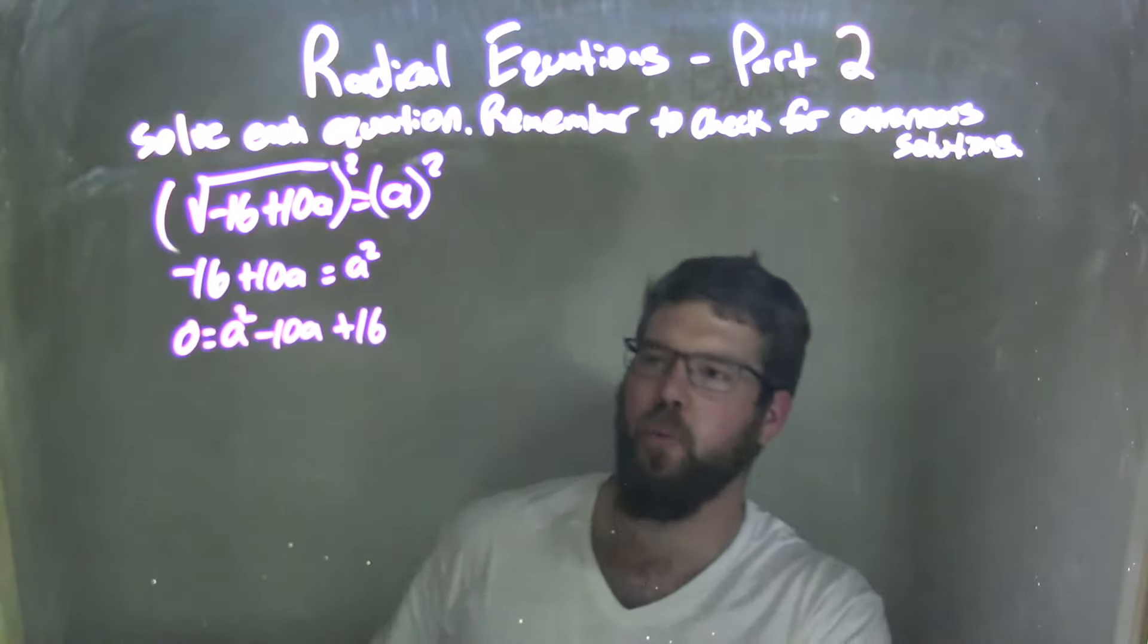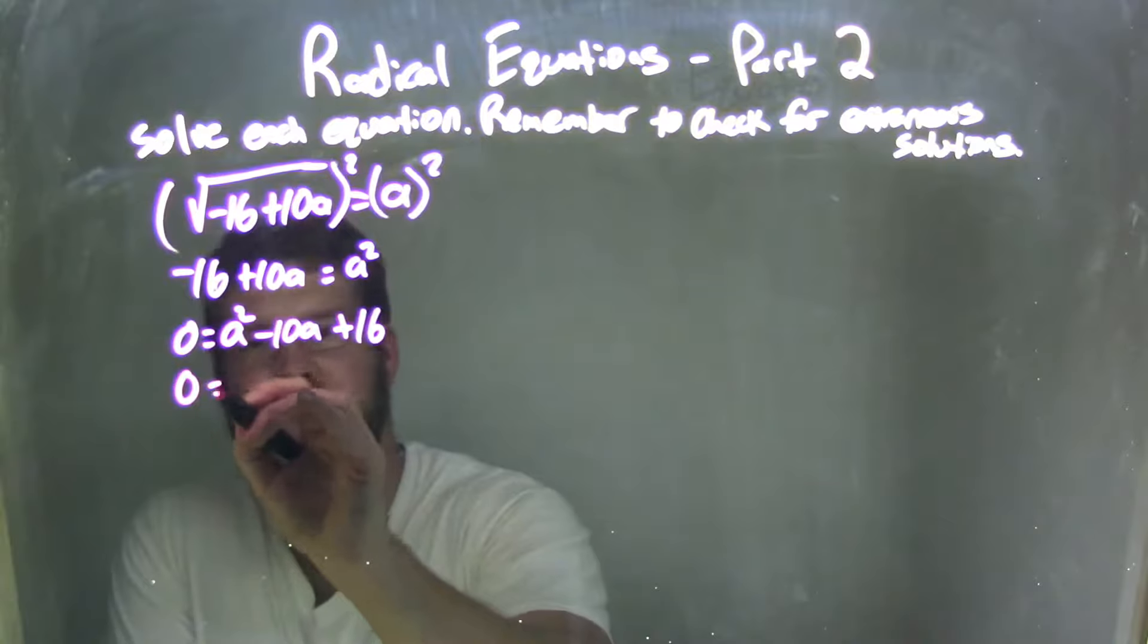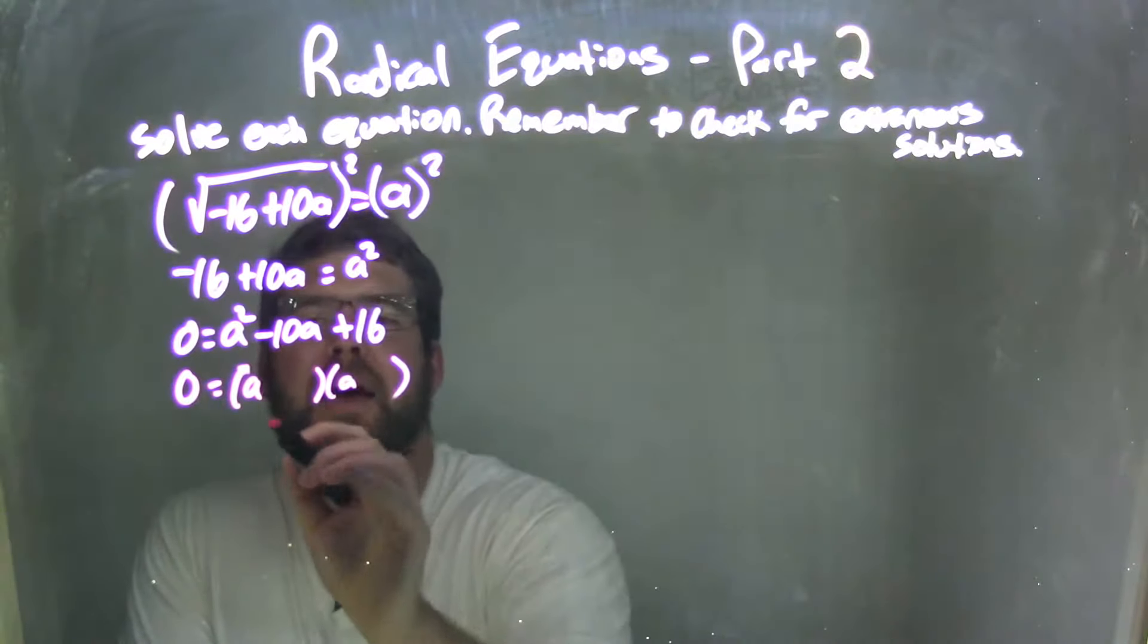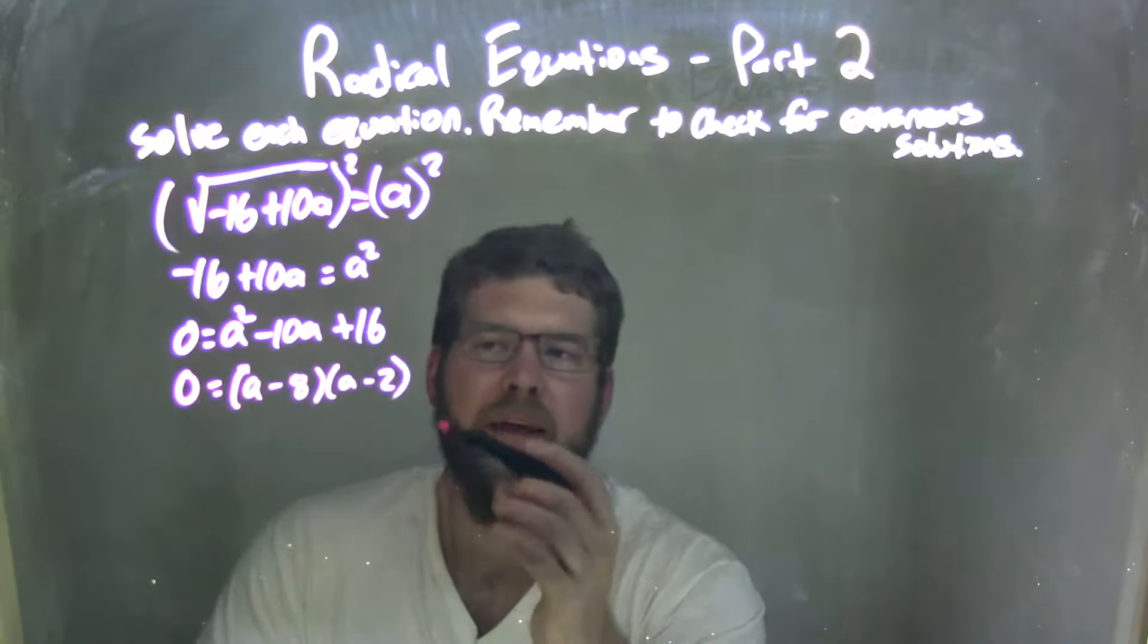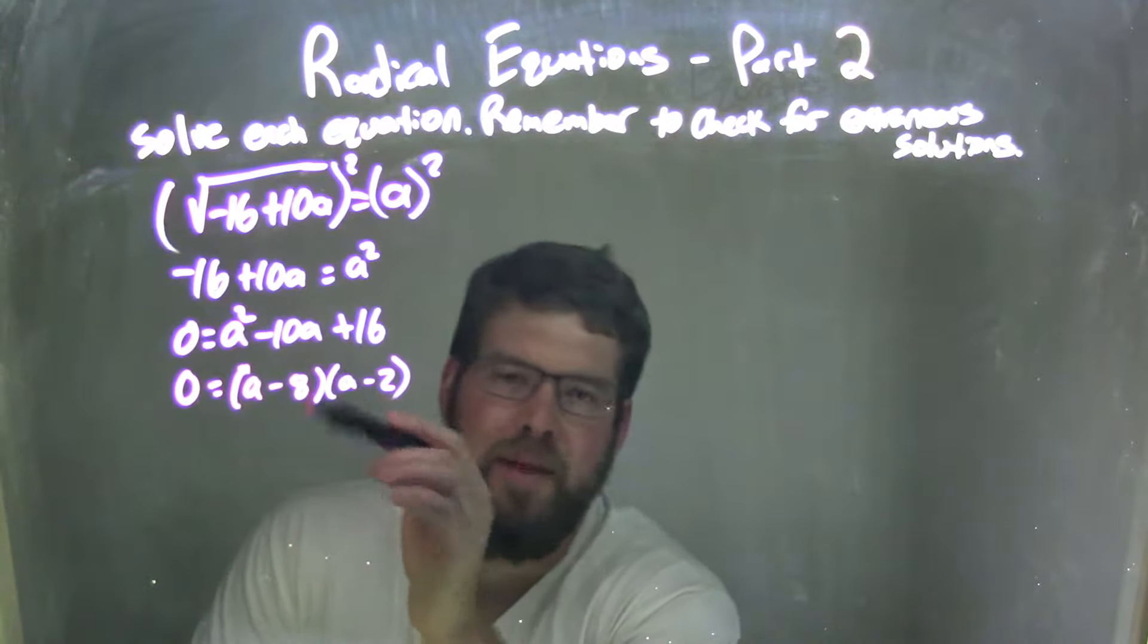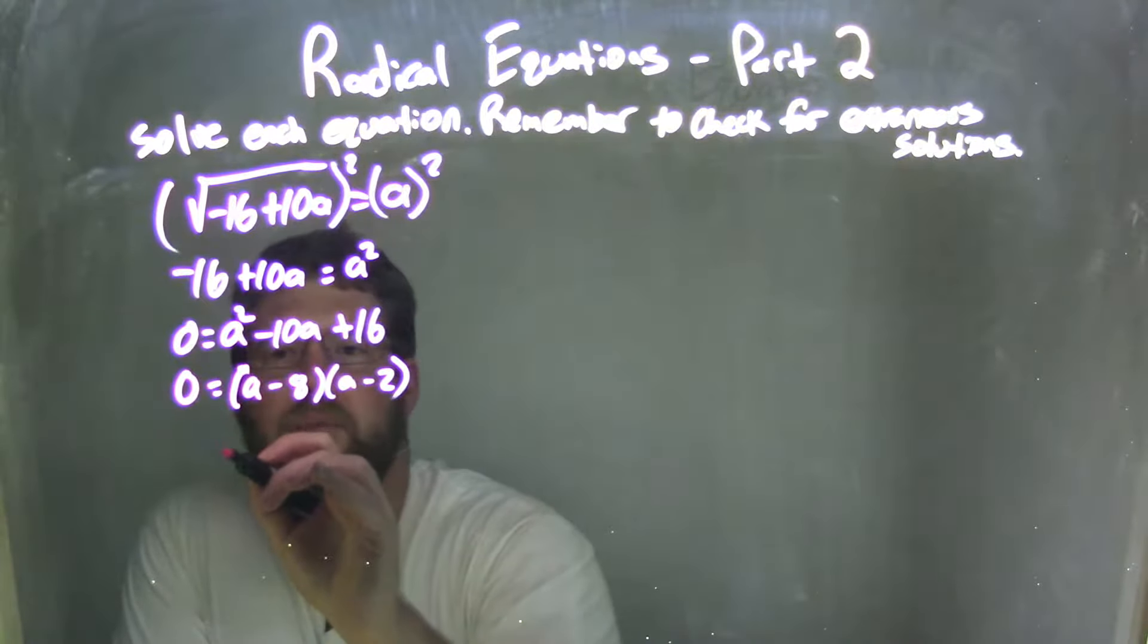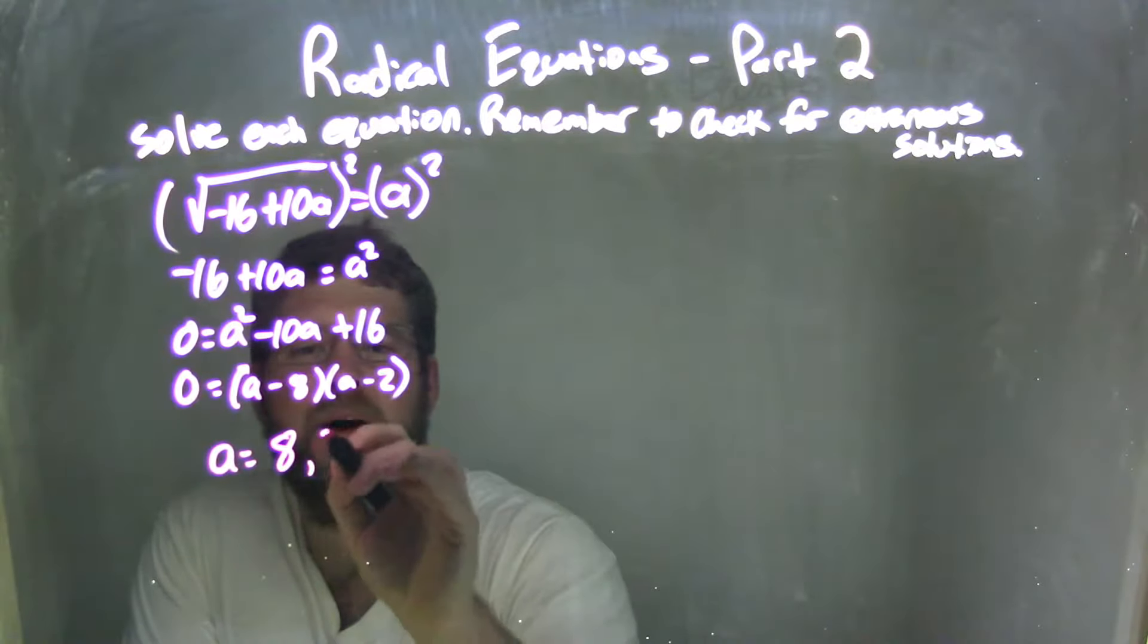So now we think to ourselves, what two numbers multiply to be 16 and add to be negative 10? That ends up being negative 8 and negative 2. Double negatives multiply to be positive, and they add together to be negative 10. Great. Set both parts equal to 0, so I'm left with our answer here: a equals 8 and a equals positive 2.